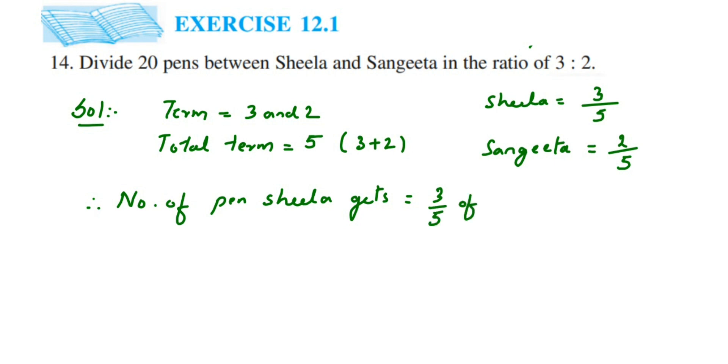Total pens are 20, so this is equal to 3 by 5. Off means multiplication, so remove the off symbol and write multiplication there. Then cancel 5 and 20: 5 ones are 5, 4s are 20, so 3 fours are 12. So 12 pens go to Sheela.